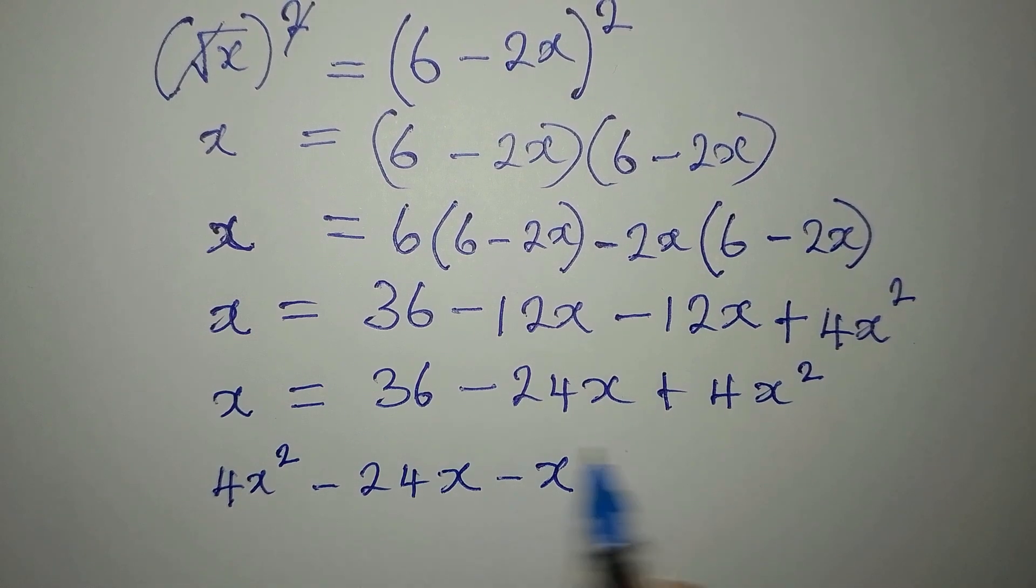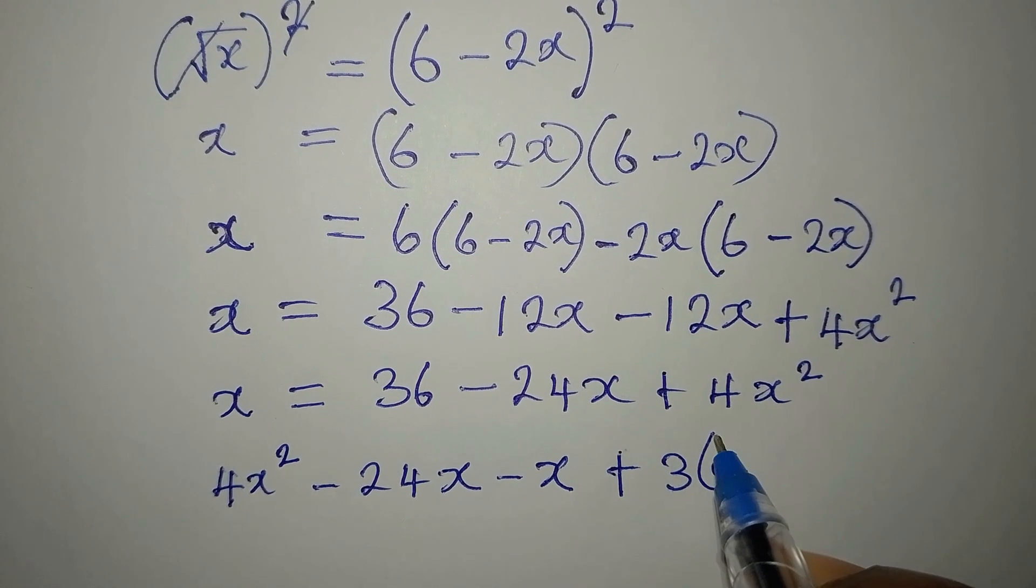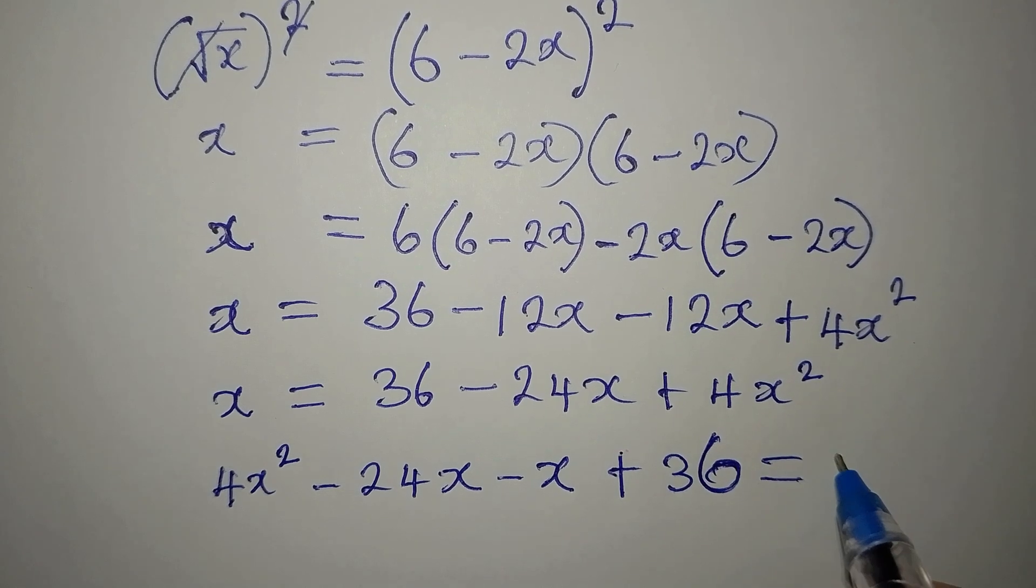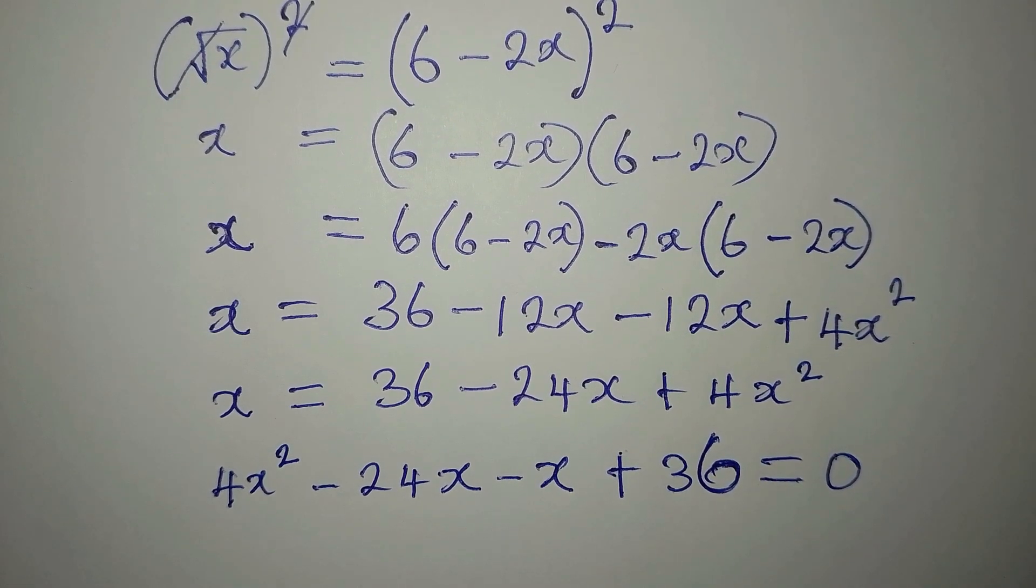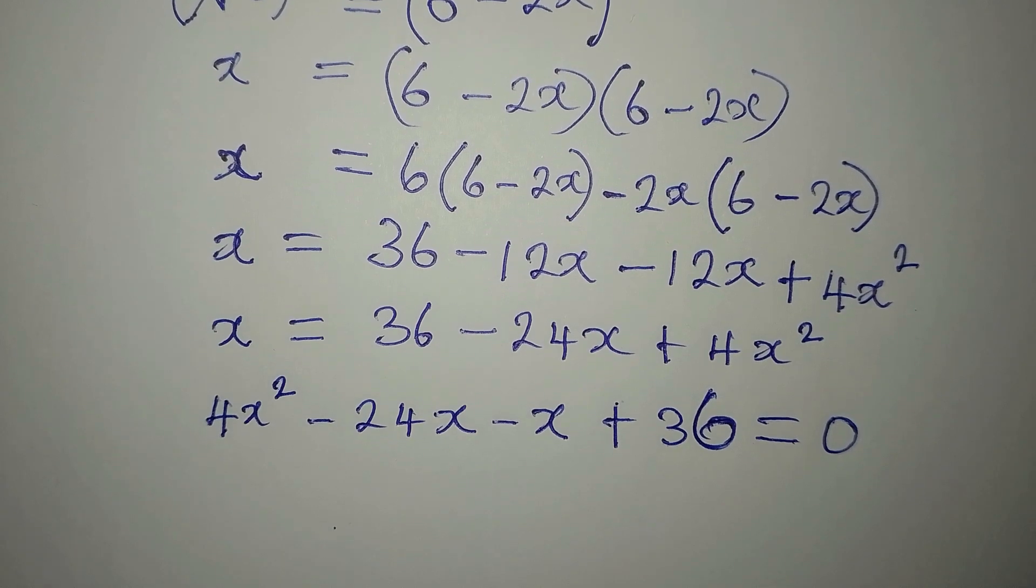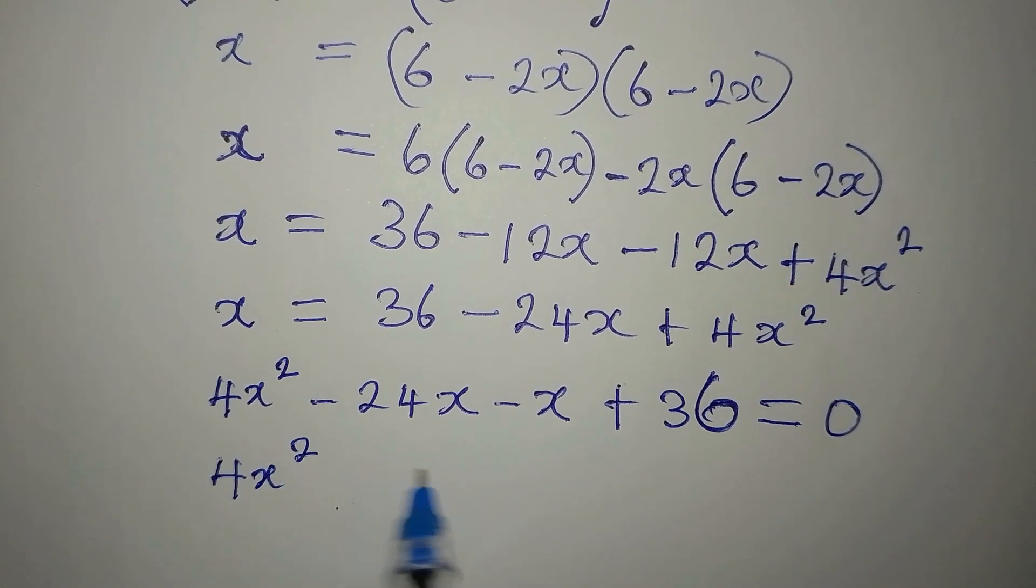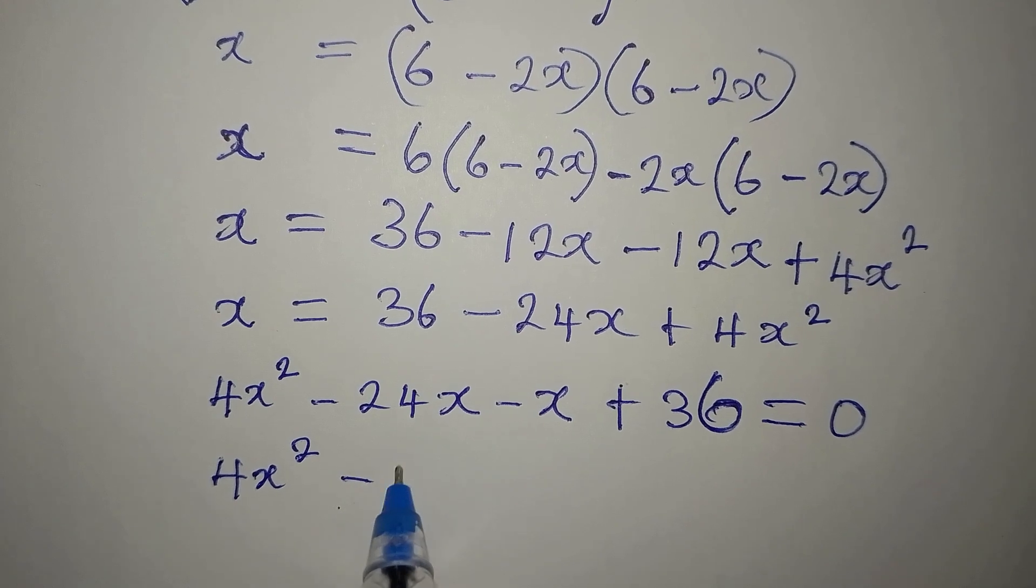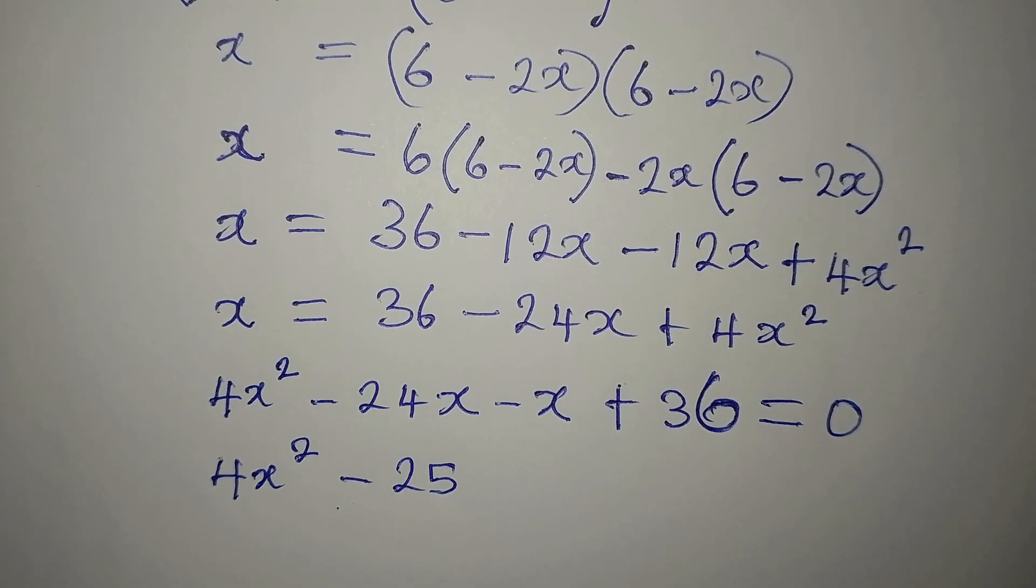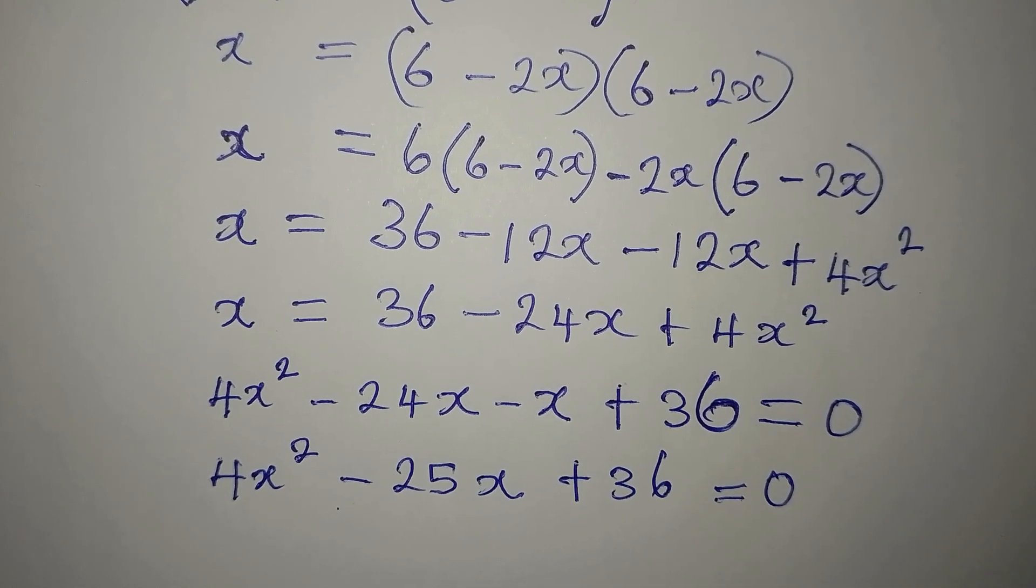Then this is plus 36. And everything will be equal to 0, because we moved everything to the right-hand side. We have 4x squared minus 25x plus 36 equals 0.